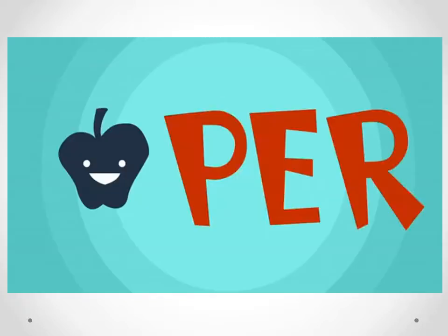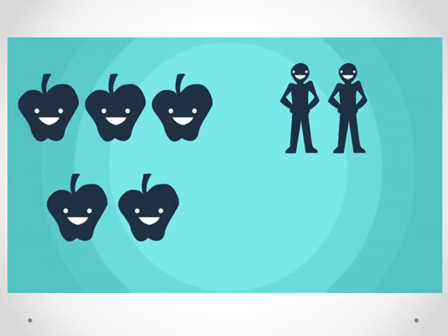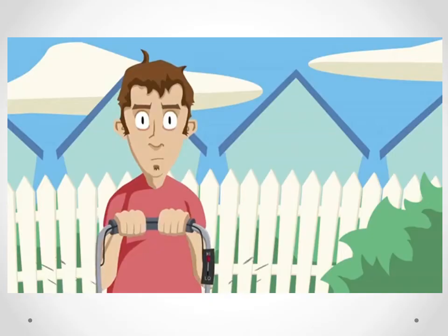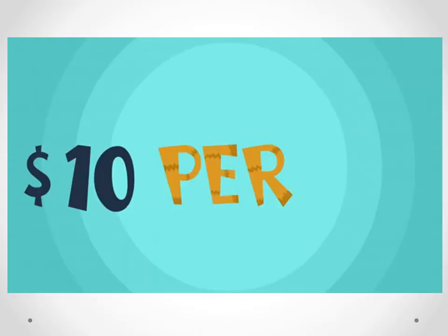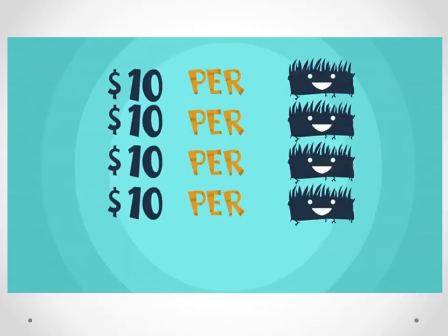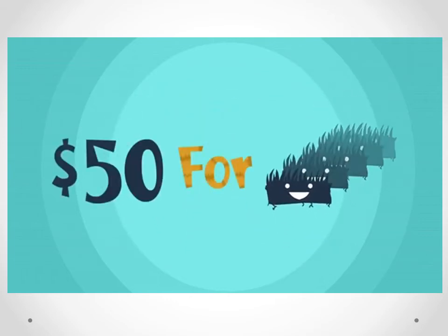You're eating one apple per person — five apples, five people. And $10 per lawn mow at five lawns in the neighborhood — that's 50 bucks.